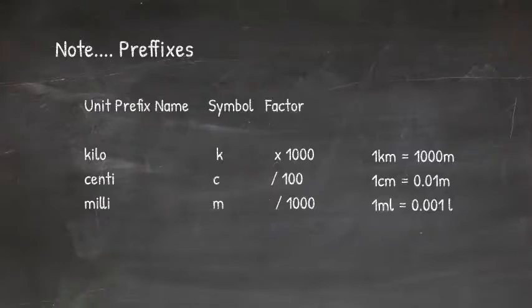Centi means a hundred. So if you see, for example, one centimetre, you need to divide the value by a hundred to get the value in metres. And milli means a thousand. So you need to divide by a thousand to get the value. So one millilitre equals 0.001 litres.